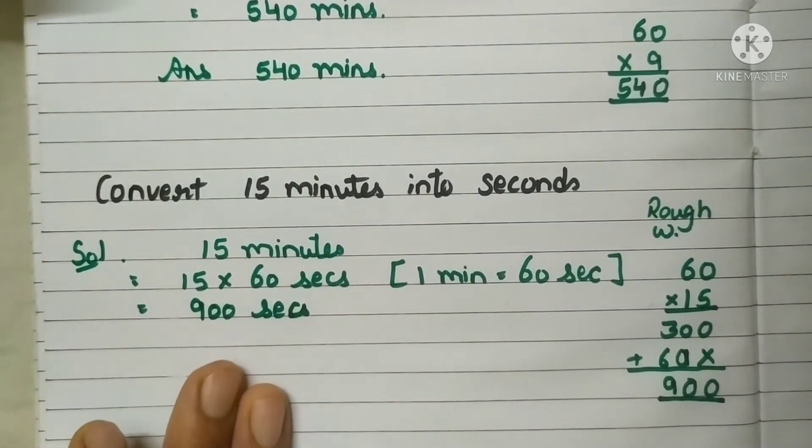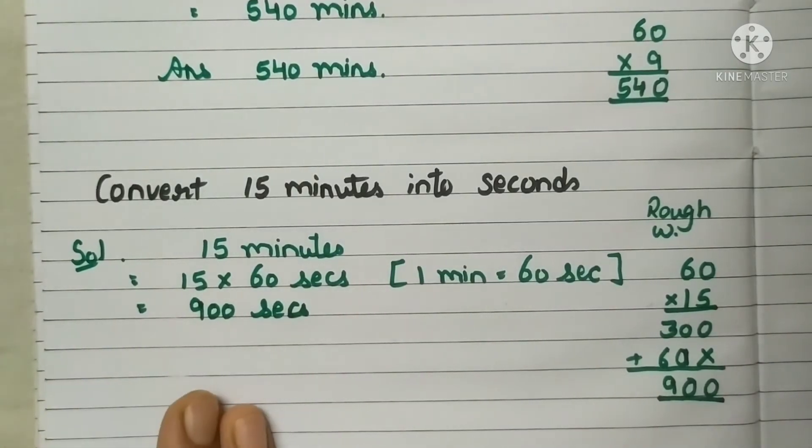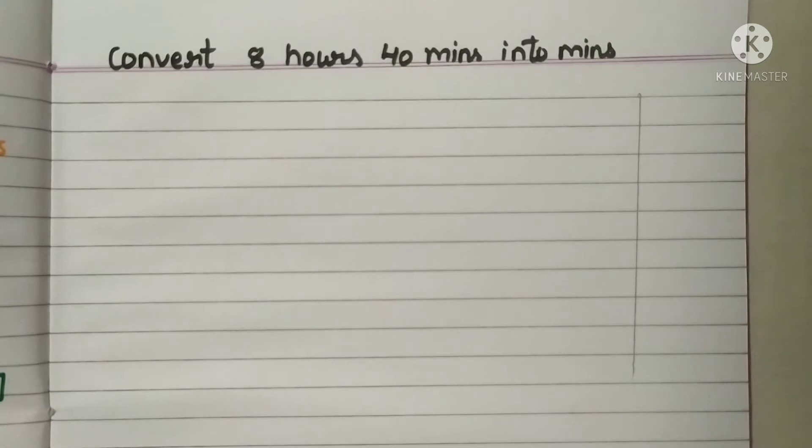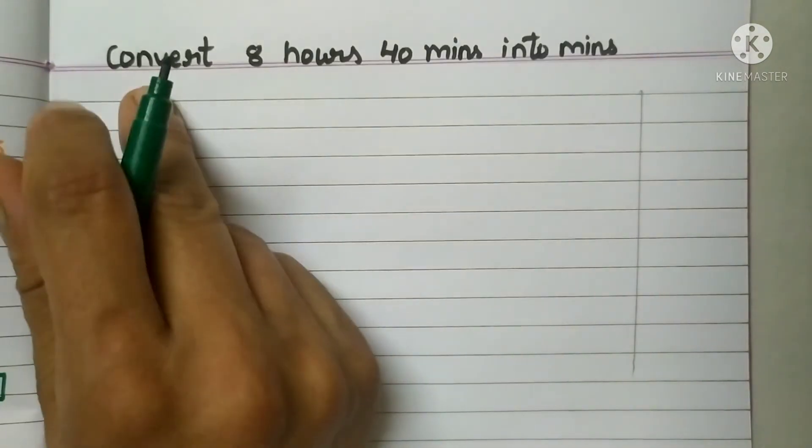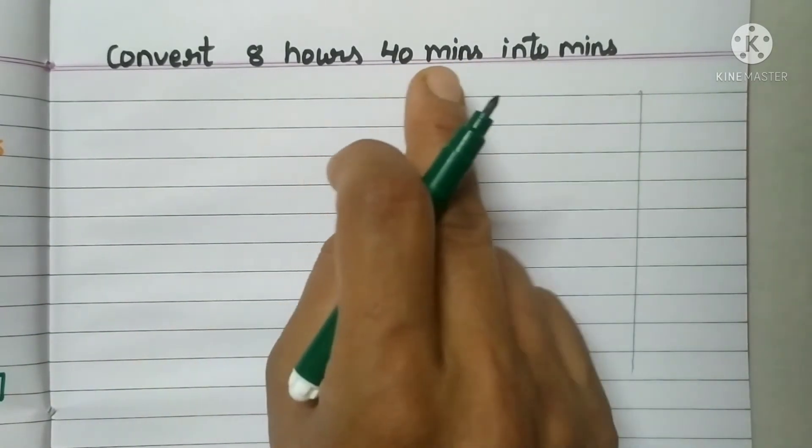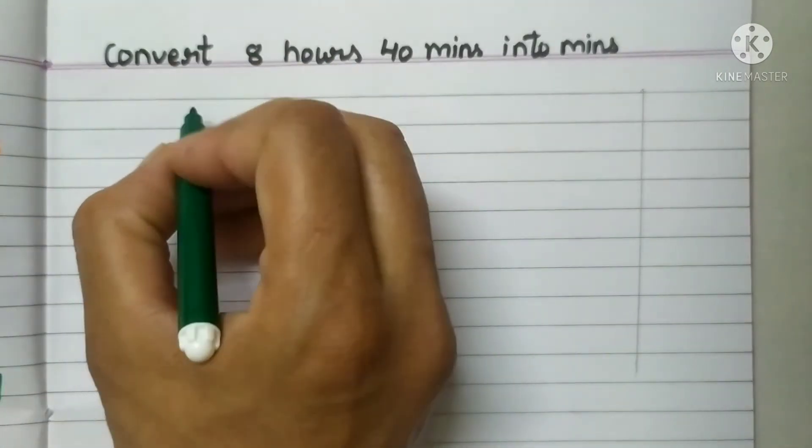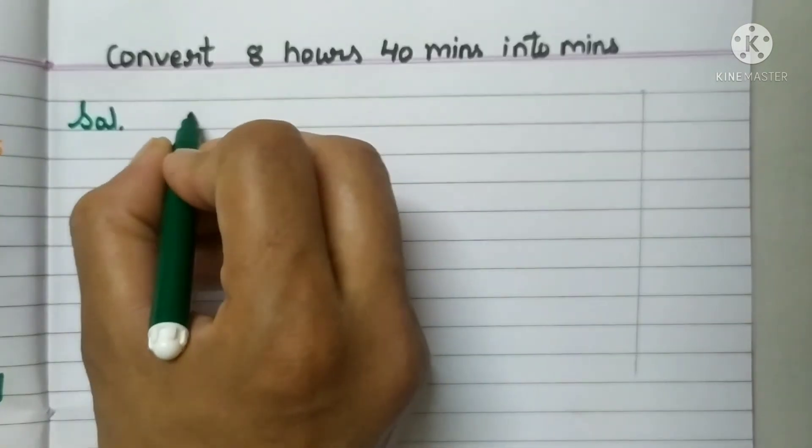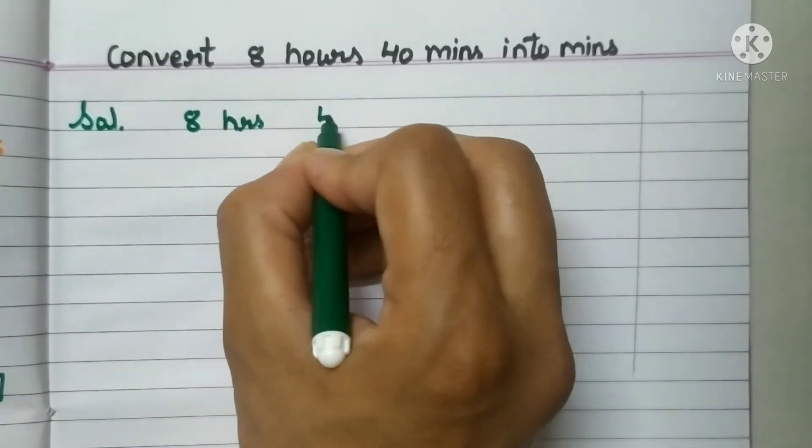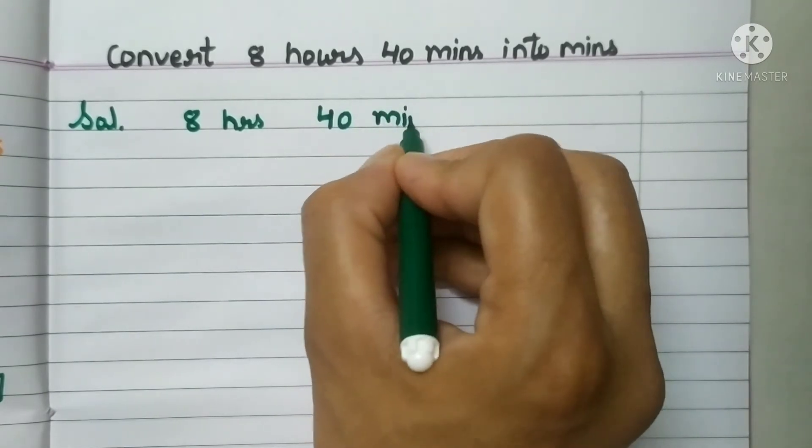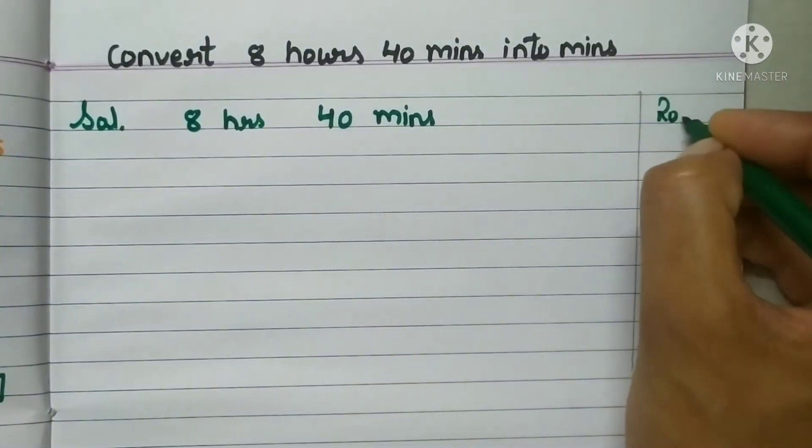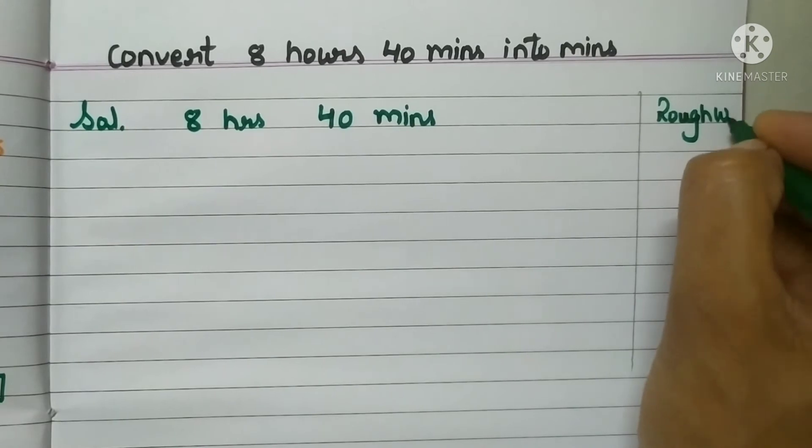So we got answer 900. So 900 seconds is the answer for 15 minutes. It's very easy. Now let's move to a big statement. Now our next question is convert 8 hours 40 minutes into minutes. Now we have to convert. There are two things. So let's start it like this: 8 hours and 40 minutes. We need the answer in minutes. And this is my rough area, rough work.